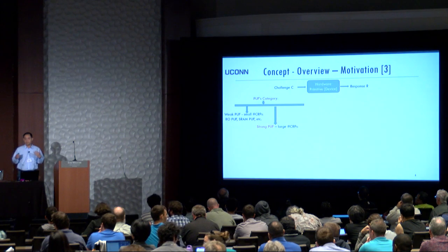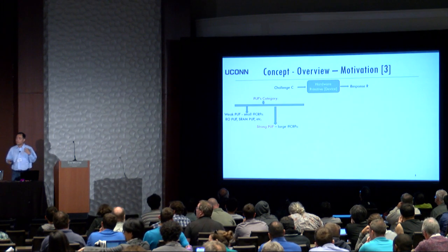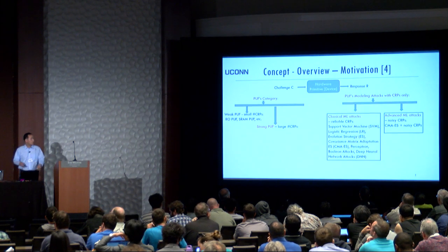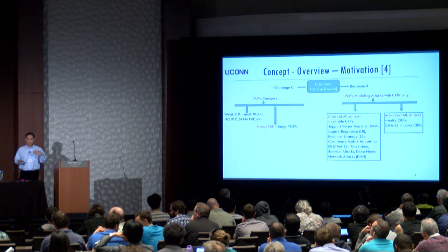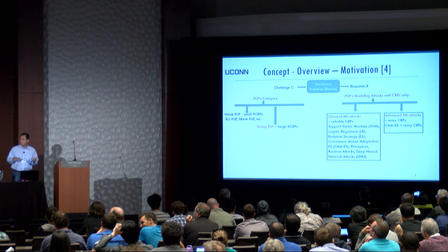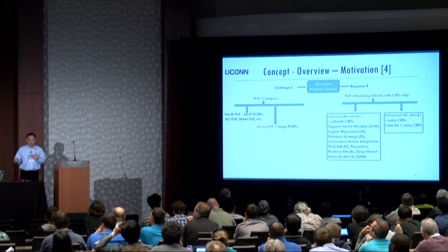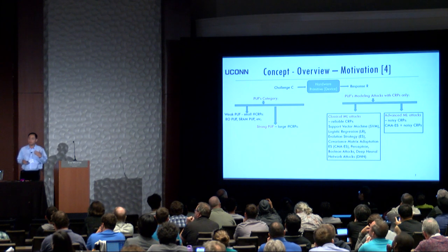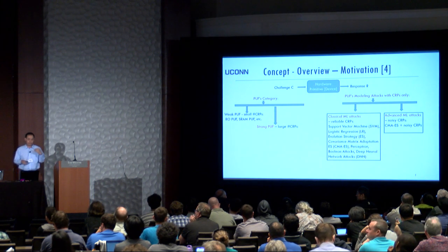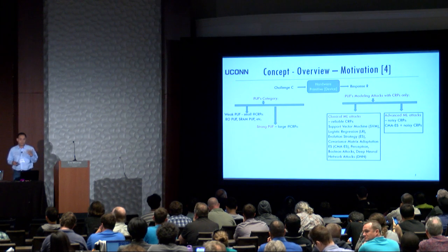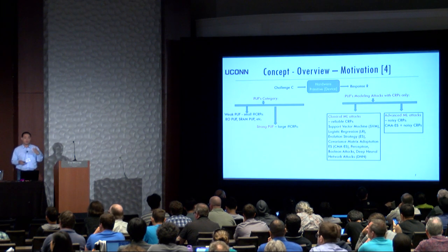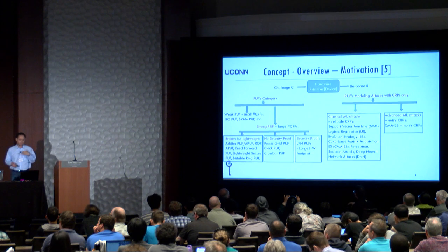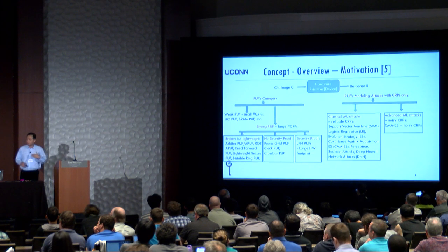The difference between weak and strong PUF is the size of challenge-response pairs. If it's very small, then it is a weak PUF; otherwise, it is a strong PUF. When we talk about attacks, some researchers have proposed attacks classified into two categories: classical machine learning attacks and advanced machine learning attacks. Classical machine learning attacks exploit information inside reliable challenge-response pairs, while advanced machine learning attacks exploit noise information inside noisy challenge-response pairs. The noise is introduced by environmental noise during PUF evaluation.